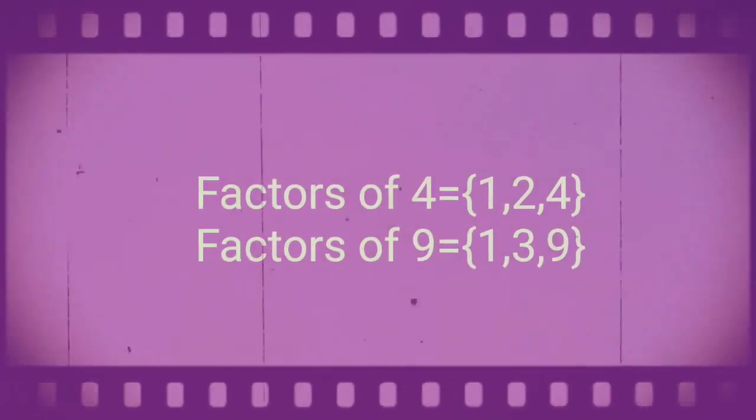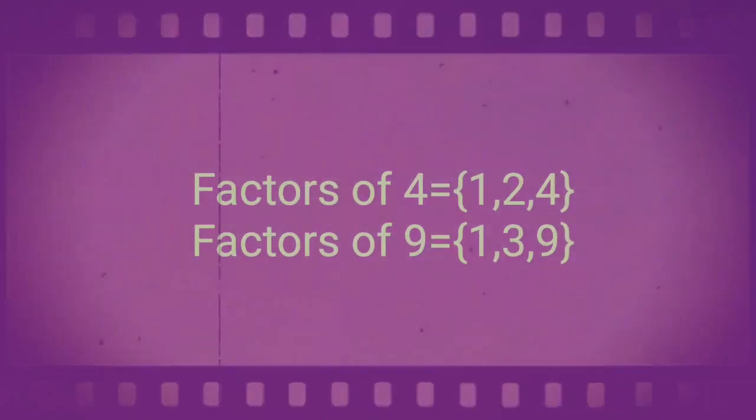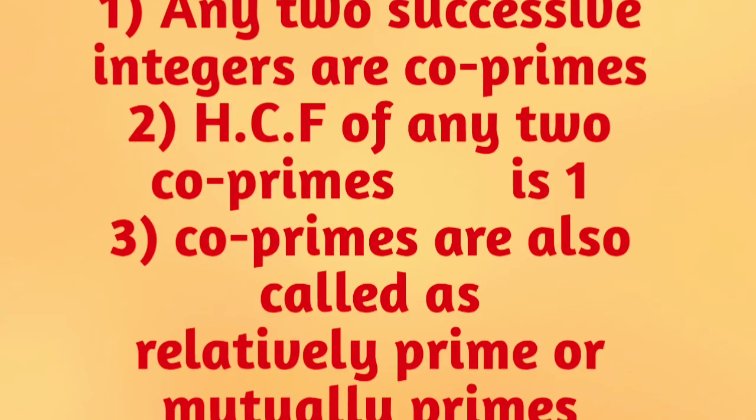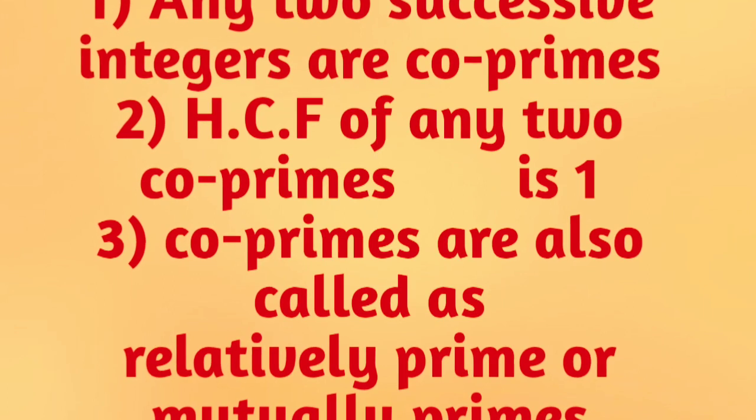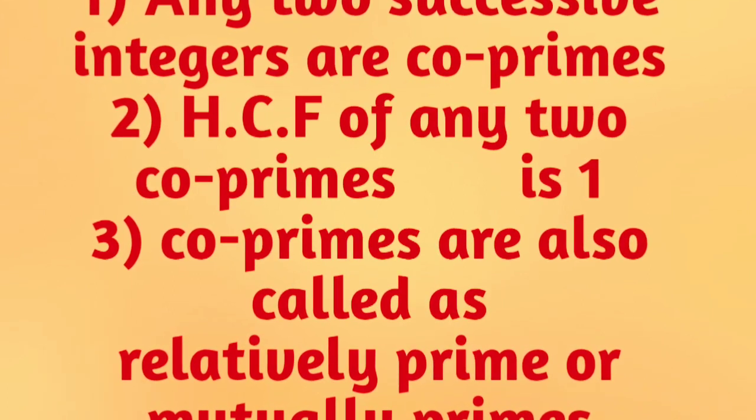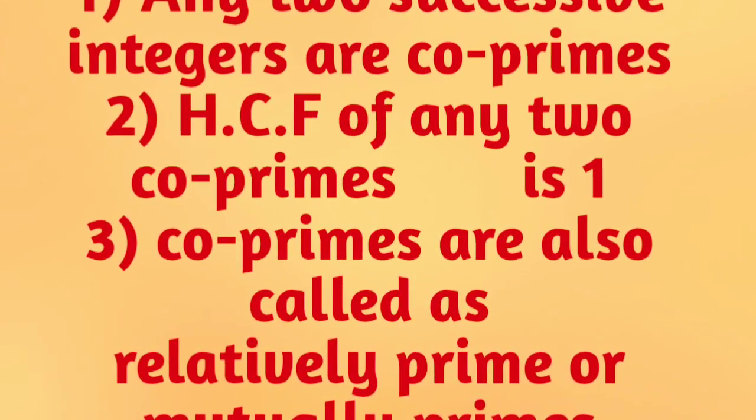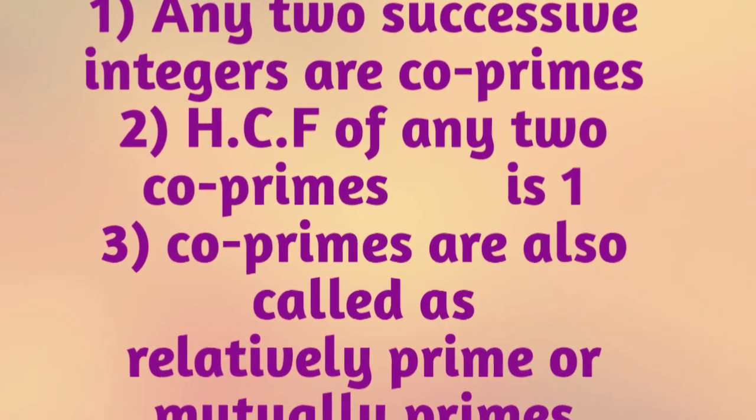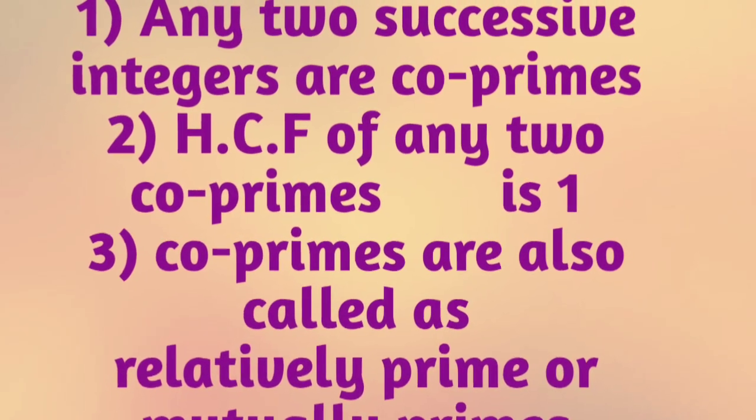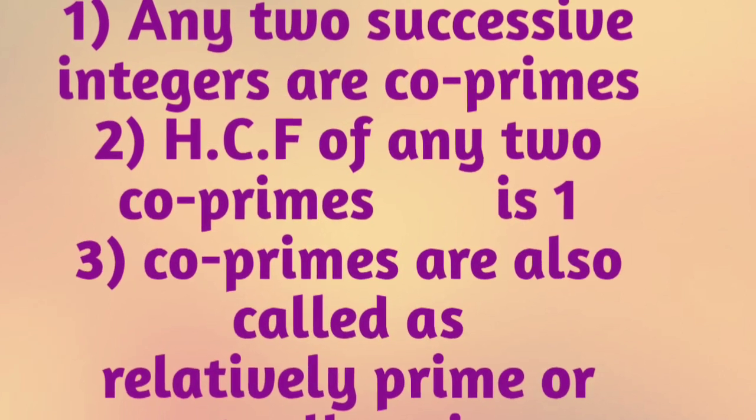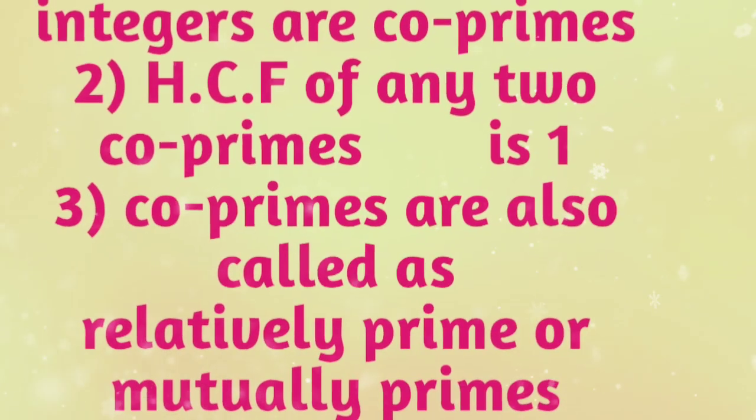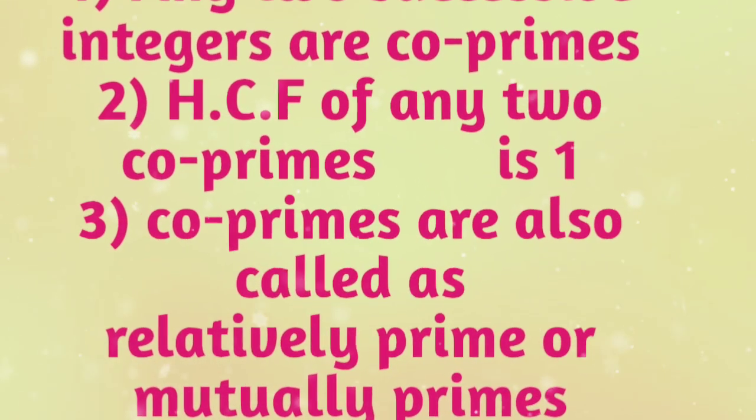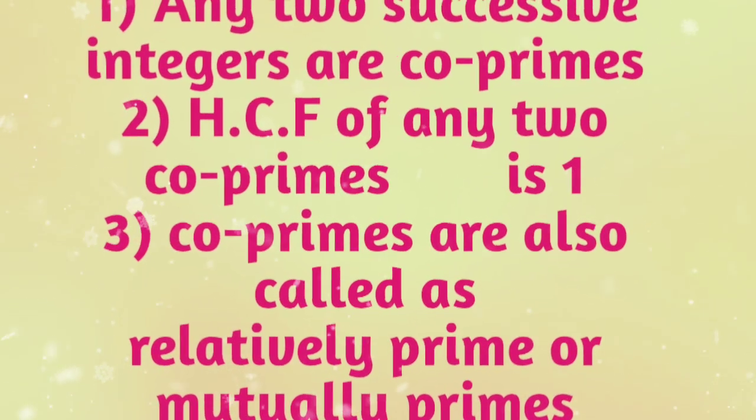Some interesting points about co-primes: first, any two successive integers are co-primes, for example 8 and 9 are co-primes. Second, HCF of any two co-primes is 1, for example HCF of 4 and 9 is 1. Third point: co-primes are also called relatively primes or mutually primes.